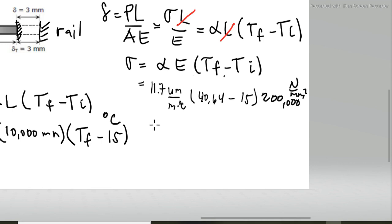Which equals the stress. The degree Celsius cancels, micrometers - multiply by meter to cancel this meter, so times 10 to the negative 6. So 11.7 times 10 to the negative 6, times the difference of 40.67 minus 15, times 200,000. Our unit here is megapascals. What we get is 60 megapascals. That's the stress answer.